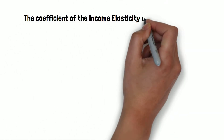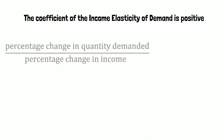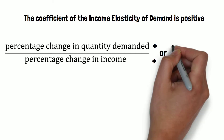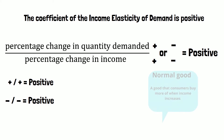Scenario 1: the coefficient of the income elasticity of demand is positive. The outcome of the division is positive when both the percentage change in quantity demanded and the percentage change in income are both positive, or both negative. The reason for this is that positive divided by positive equals positive, and negative divided by negative is also positive. When the outcome of the equation is positive, this means that people demand more of a specific good when their income rises.